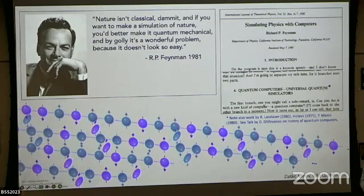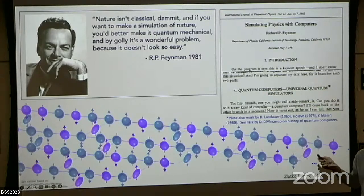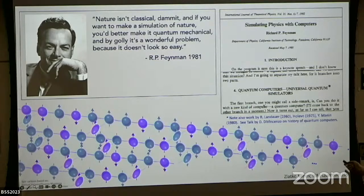Let's start with the big picture. You've probably seen a version of this slide many times: why talk about quantum computers for simulating matter and materials? There's the famous quote by Richard Feynman — in section four of his paper he talked about the idea of a universal quantum simulator based on a quantum computer. When I say quantum computer I'll only refer to digital machines; analog machines I'll think of separately. There's also earlier work by folks like Mann, Hulevo, Landauer, and others.